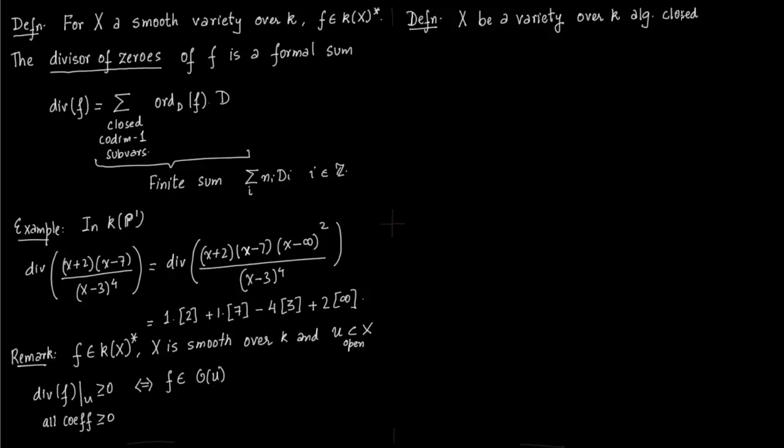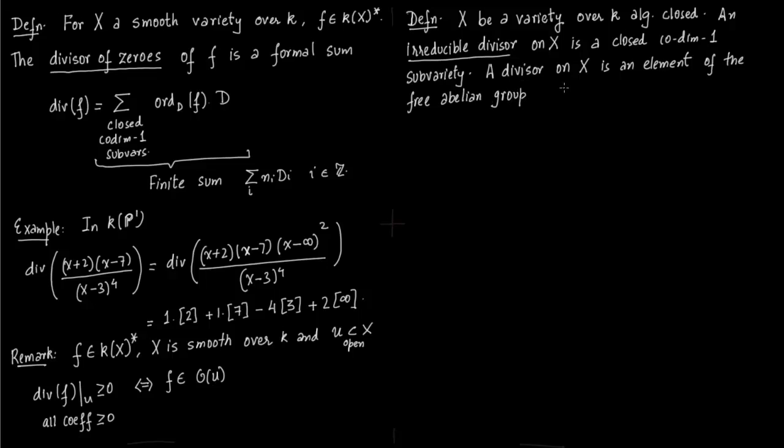So now another definition. Again X is a smooth algebraic variety over k where k is closed. So an irreducible divisor on X is a closed codimension-1 subvariety.